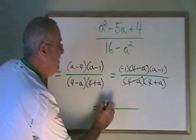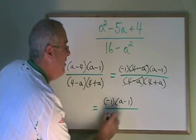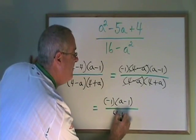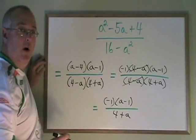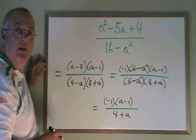Our final answer is negative 1 times a minus 1 over 4 plus a. If you want, you can multiply the negative 1 into the binomial, but this is a valid final answer to this problem.